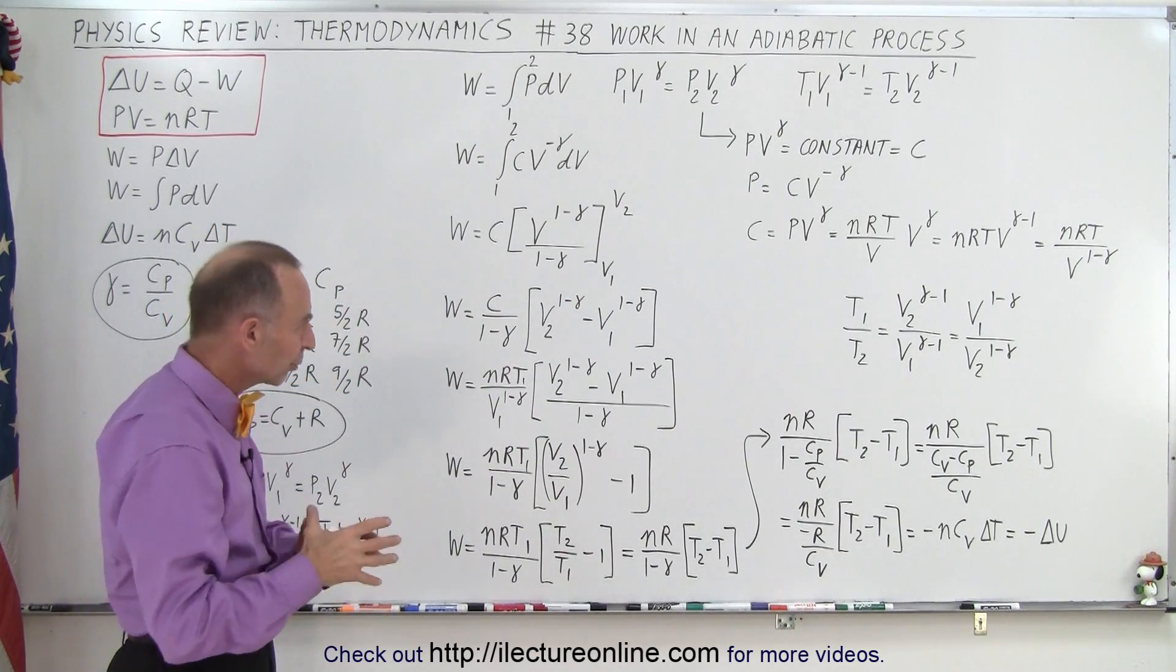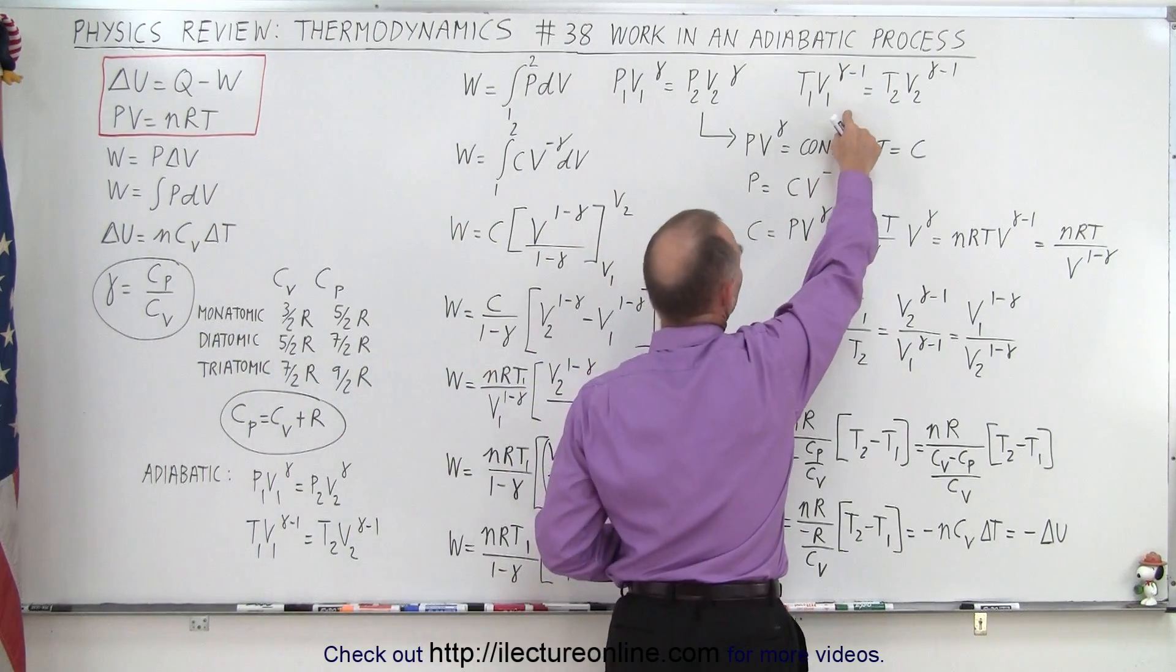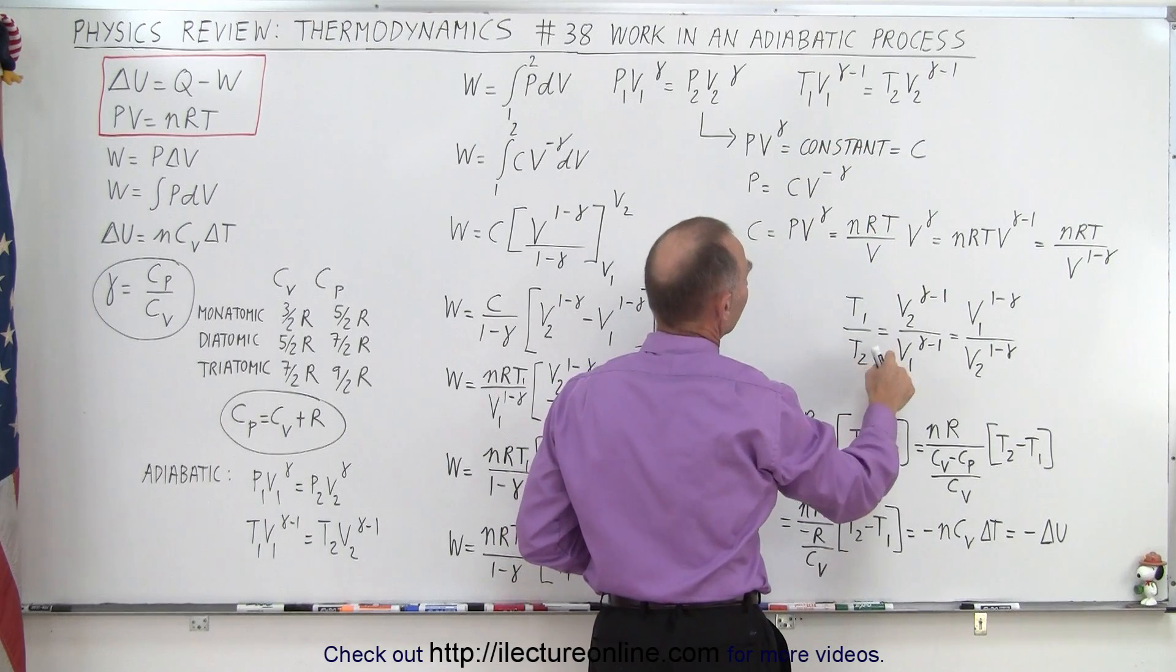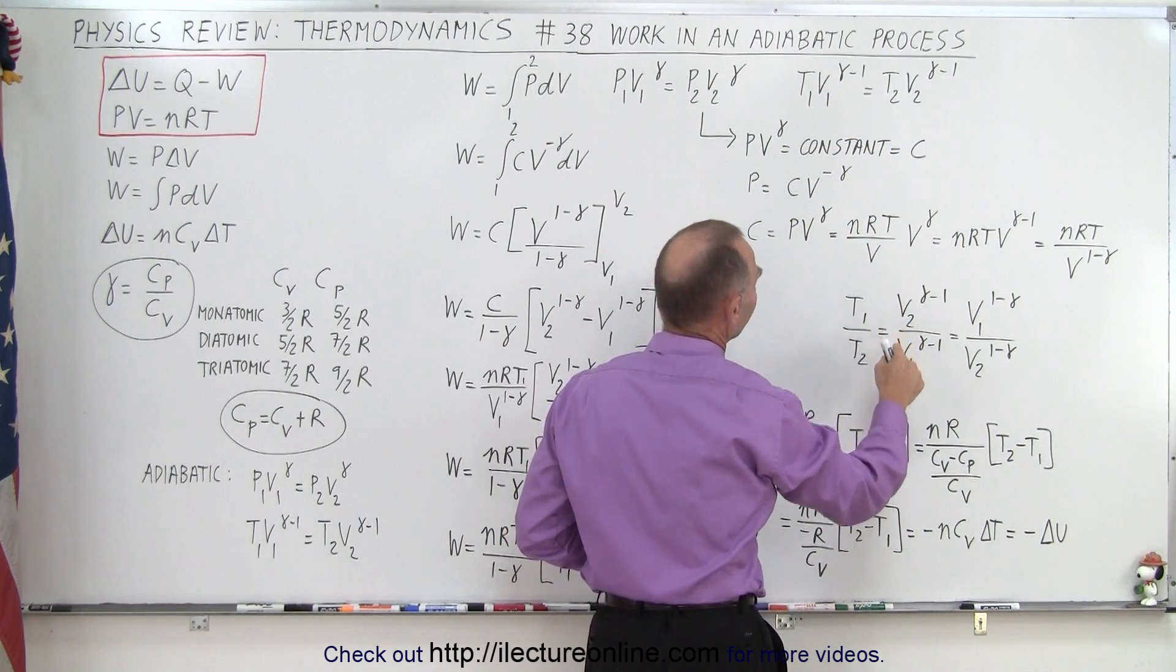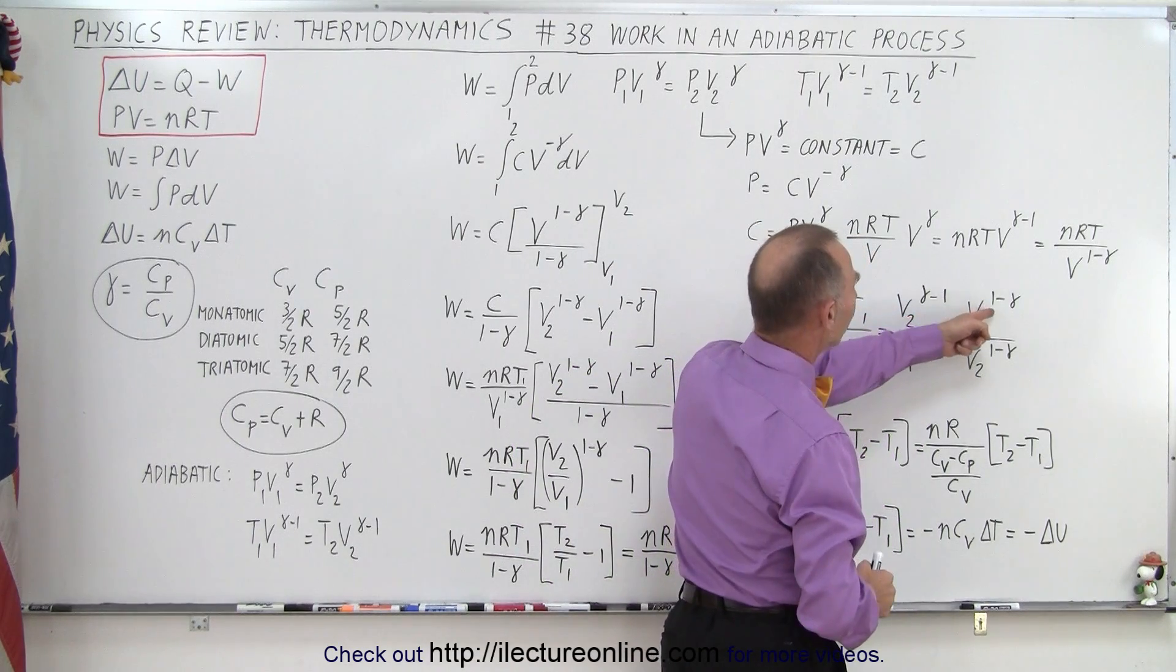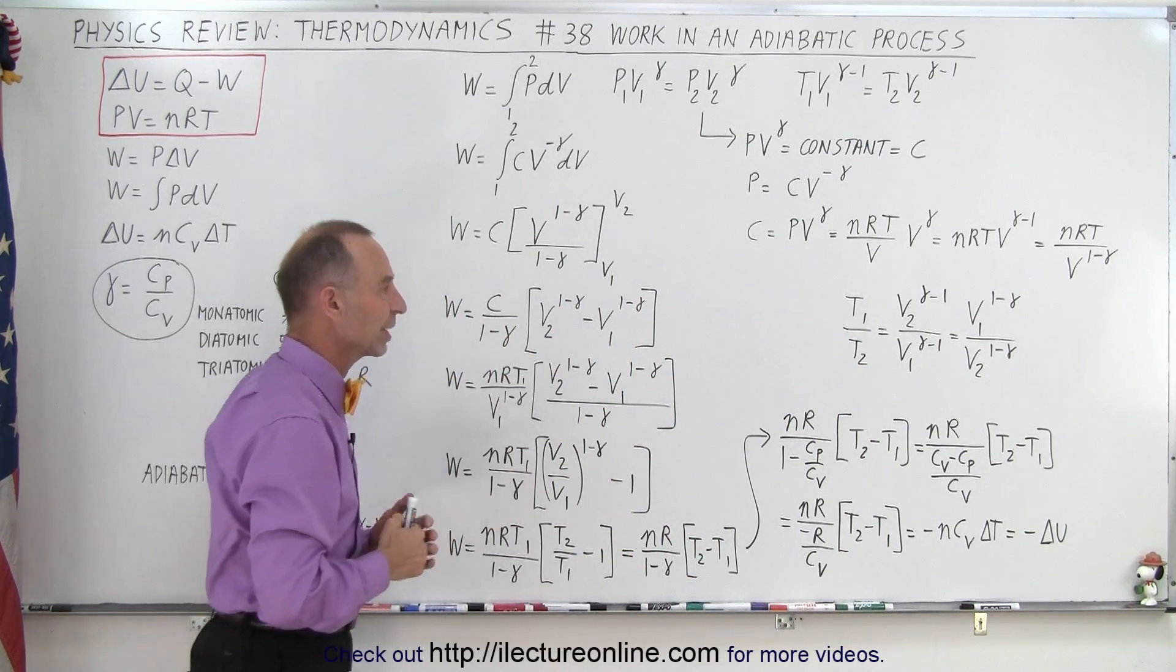But we want it in terms of the temperature. So what we can do then is we take the second equation, and then realize that the ratio of T1 over T2 is equal to the ratio of V2 over V1 to the gamma minus 1. And then if we invert that, we can write it as 1 minus gamma, because we want to have the same expressions we have over here.